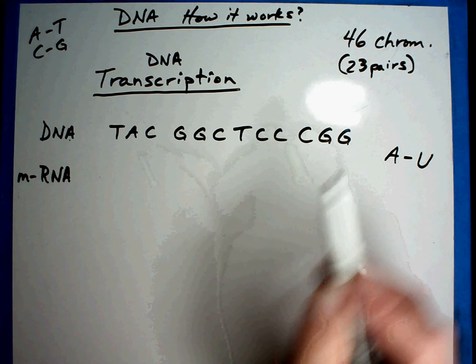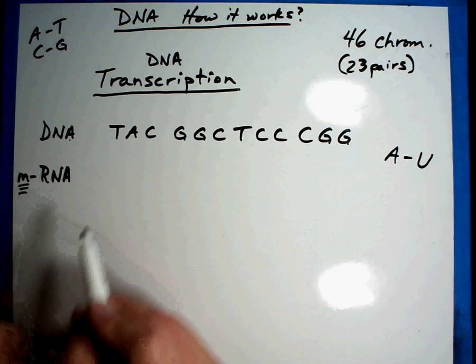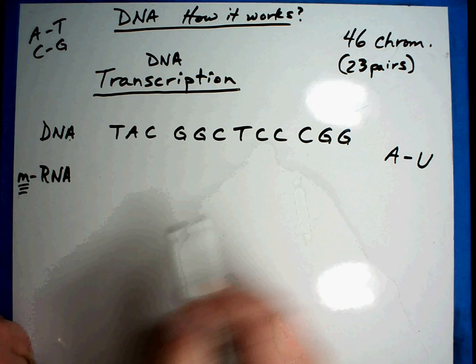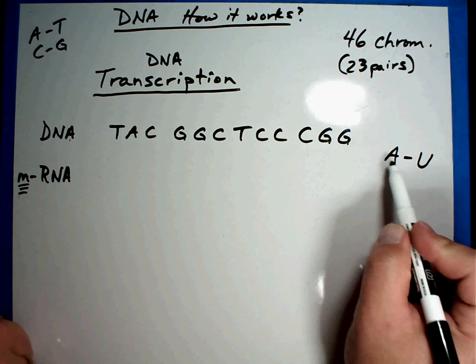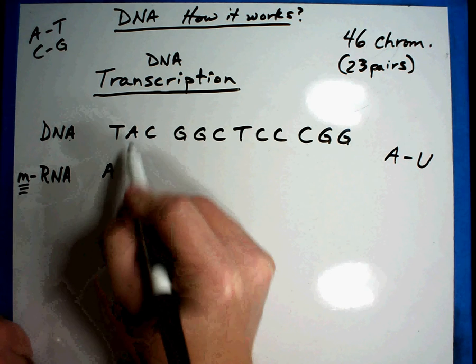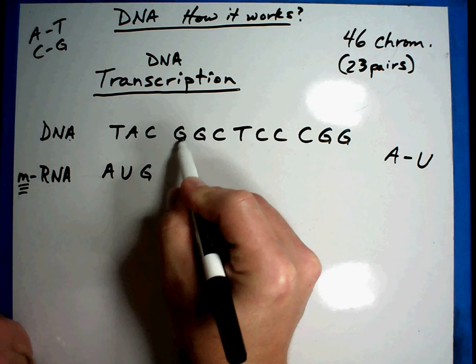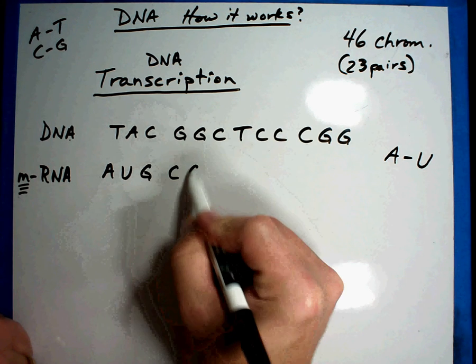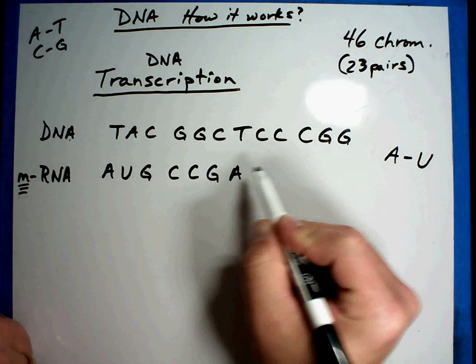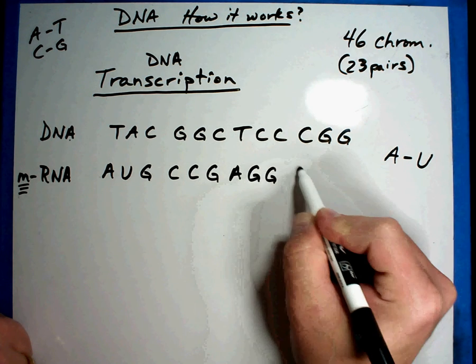The messenger is going to carry part of the DNA, and it's going to be in secret code. So let's see if we can figure out the secret code. So remembering, A's go with U's, T goes with A, A goes with U, that's the new rule, C goes with G, G goes with C, G goes with C, C goes with G, T goes with A, C goes with G, C goes with G, C goes with G again, G goes with C, and G goes with C.